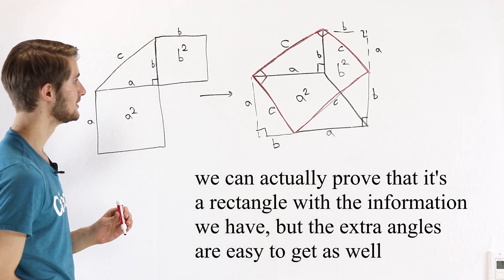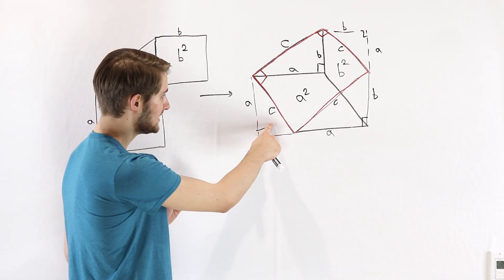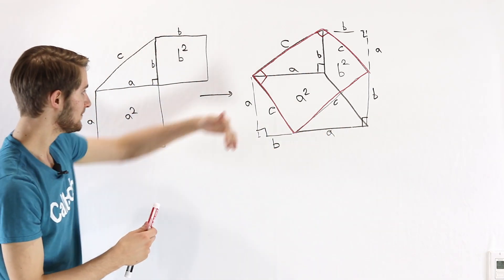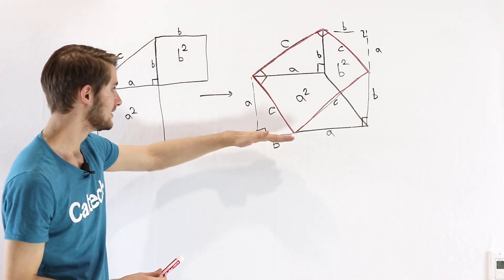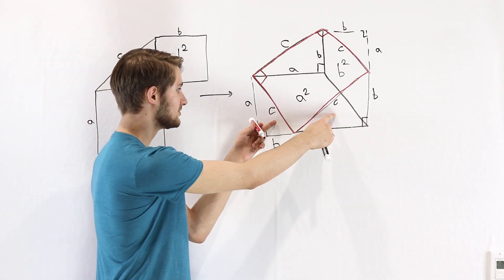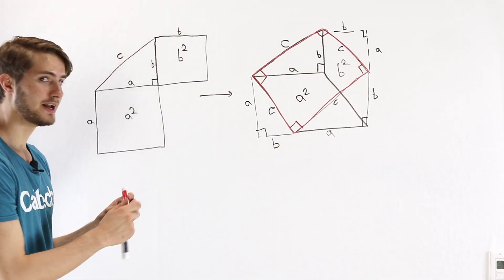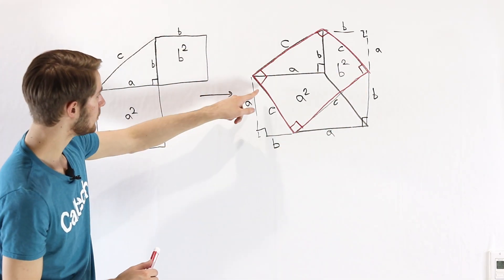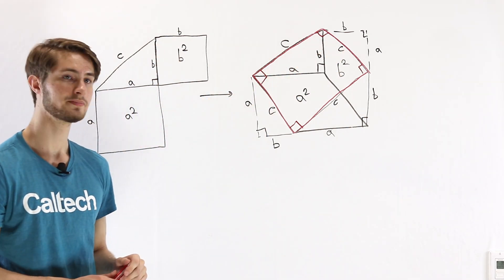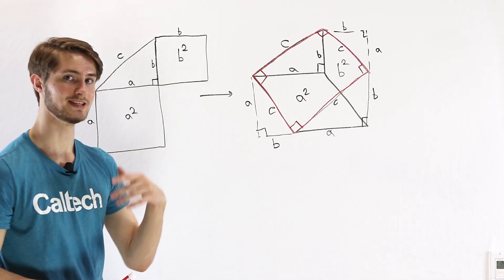We just need one more angle to seal the deal. Notice that this triangle is again a 90-degree rotation of this triangle by the same argument: this side a is rotated, this side b is rotated 90 degrees. That means these two sides with length c must also be a 90-degree rotation. Now we have a quadrilateral with all 90-degree angles and sides that all have length c, which means this is a square with area c squared.